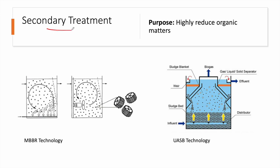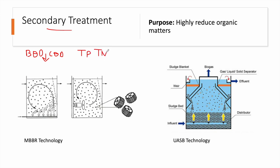Next we have the secondary treatment — the bulk of a wastewater treatment plant. The main purpose is to highly reduce organic components such as BOD and COD, and also nutrients like total phosphorus and total nitrogen, including nitrates and nitrites. These nutrients can highly deplete the oxygen of a river if the treated water is later disposed there, potentially causing eutrophication and oxygen depletion.